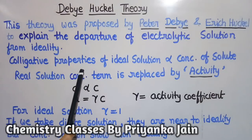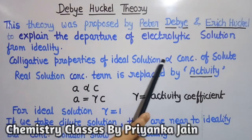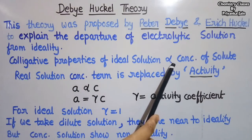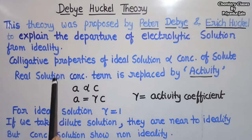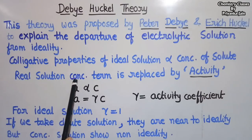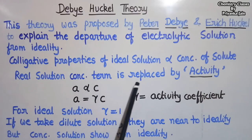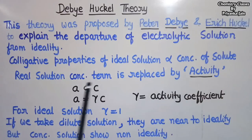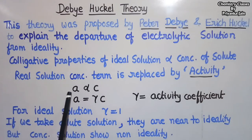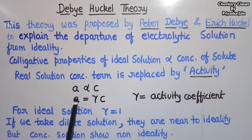We know that the colligative properties of ideal solutions are directly proportional to the concentration of the solute, but this does not happen in the case of real solutions. In real solutions, we cannot take the concentration term as a whole, and this concentration term is replaced by another term known as activity, represented by A.